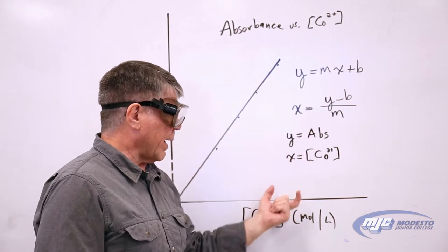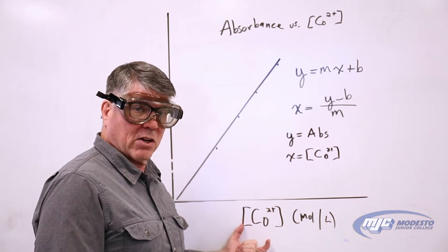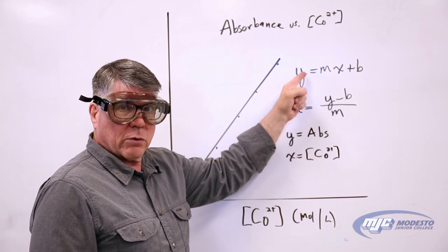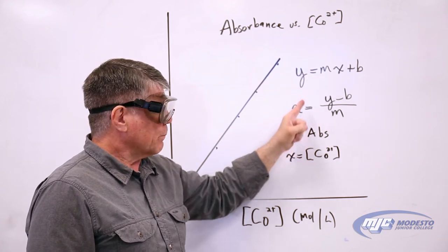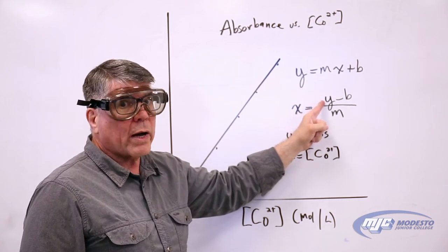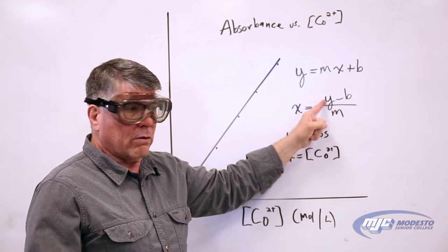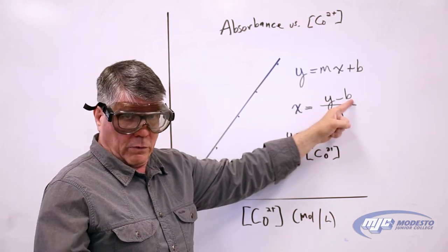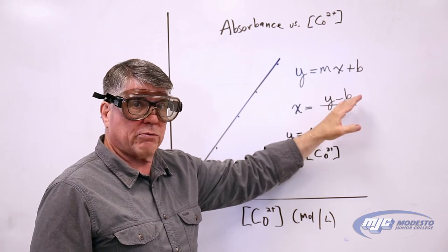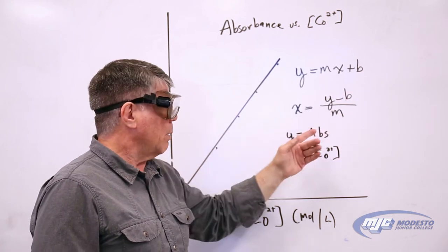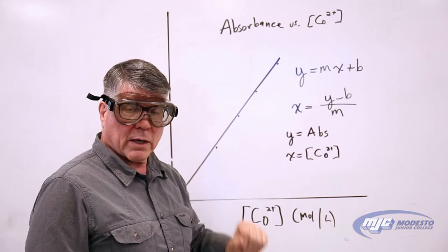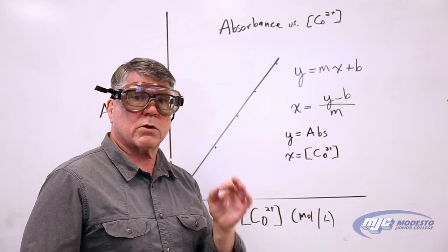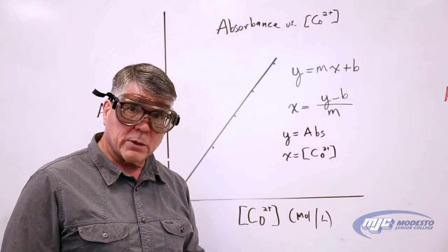In this experiment we're concerned with x, because x is the concentration of our unknown. So if you rearrange this equation and solve for x, you're going to know y — y is the absorbance of your unknown. B is from your equation, the y-intercept the spreadsheet gives you, and m is the slope. Plug those in and you're able to calculate the concentration of cobalt and also of copper in your unknown.